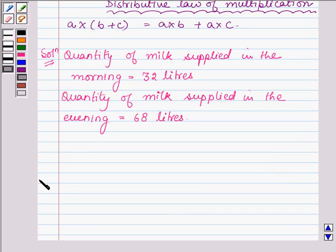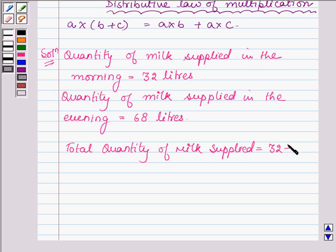So, the total quantity of milk per day that he supplies is equal to 32 plus 68 litres. And, on adding 32 and 68, we get 100 litres. So, per day he used to supply 100 litres of milk to the hotel.